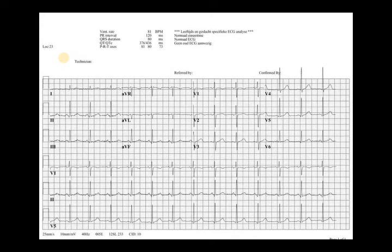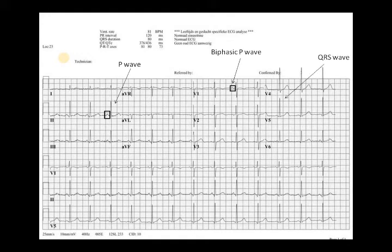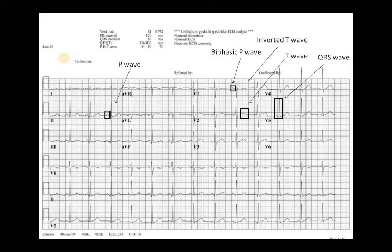Looking at this ECG, here is the P wave. You can see a biphasic P wave in lead V1. Here is the QRS complex — you can now recognize it clearly. The T wave: in V2 it is positive, and in V1 it is inverted. So after V1 the T wave has become positive, and it must remain positive in all the following chest leads.